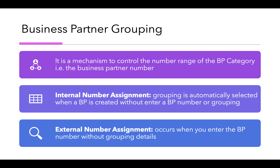This can be achieved in two ways: internal number assignment and external number assignment. Internal number assignment is the grouping automatically selected when a BP is created, even when the BP number or grouping is not entered. External number assignment occurs when you enter the BP number without the grouping details — then the grouping is picked automatically and the BP number is generated as per the grouping number range.